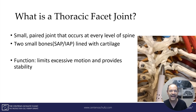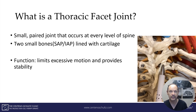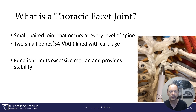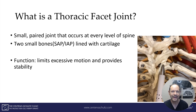A thoracic facet joint is a small paired joint that occurs at every single level of the spine. It's where two small bones — called the superior articular process — join the inferior articular process. It's a joint just like your knee or your hip joint. It's lined with cartilage and slides smoothly across one another. It functions to limit excessive motion but also provides very important stability for the thoracic spine. There's a facet joint at every level of the spine: in the cervical, the thoracic, and the lumbar.